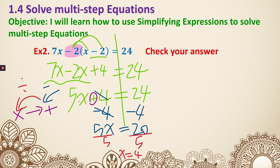Now I just need to take the 4 and replace the x. So that's 7 times 4 minus 2 times 4 minus 2. We're trying to see if it actually equals 24.